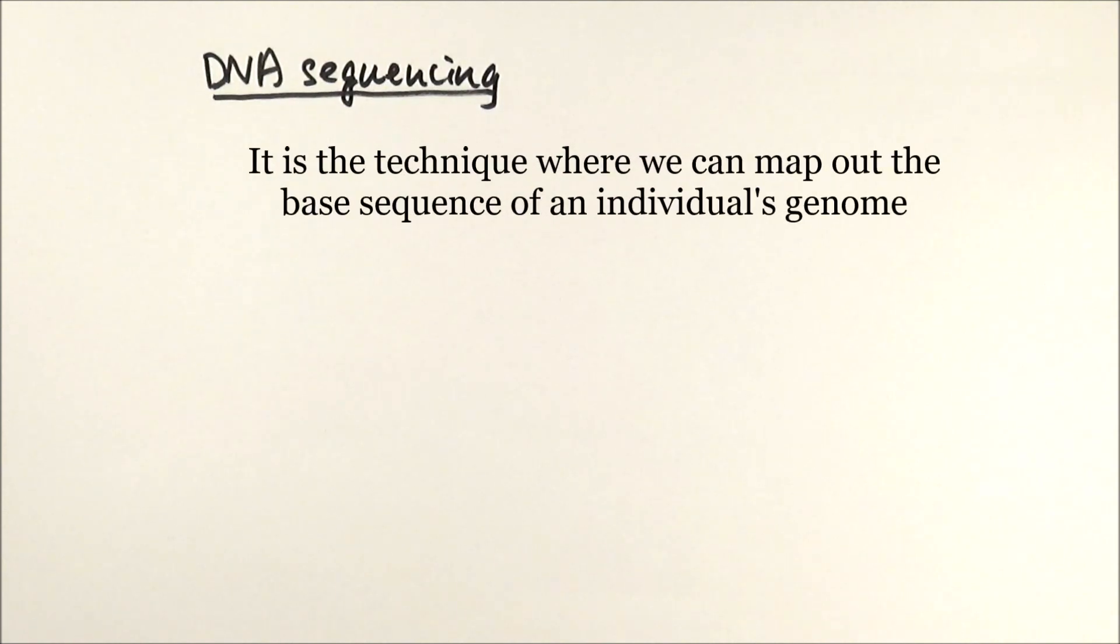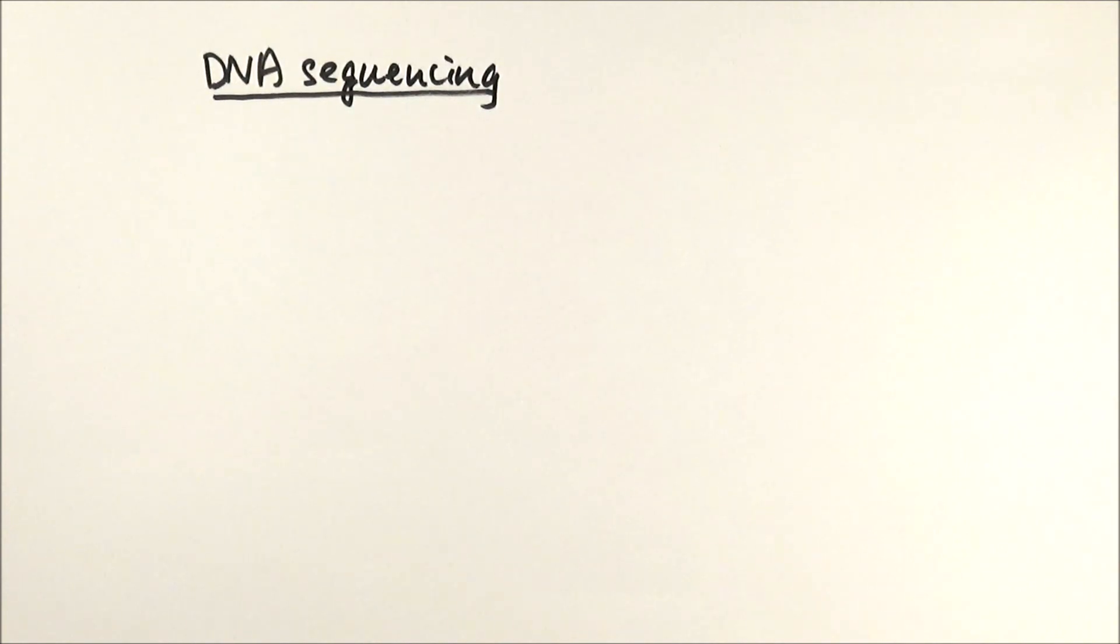DNA sequencing was developed by Frederick Sanger, also called the Sanger method or Sanger sequencing. It was a very important breakthrough in the Human Genome Project and actually sped up the entire project by a couple of years, saving a lot of resources and money. It also paved the way for future improvements which led to next-generation sequencing.